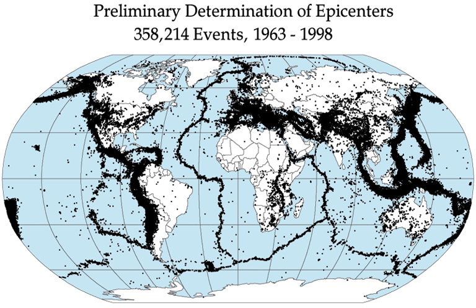The seismicity, or seismic activity, of an area is the frequency, type, and size of earthquakes experienced over a period of time. The word tremor is also used for non-earthquake seismic rumbling. At the earth's surface, earthquakes manifest themselves by shaking and displacing or disrupting the ground.